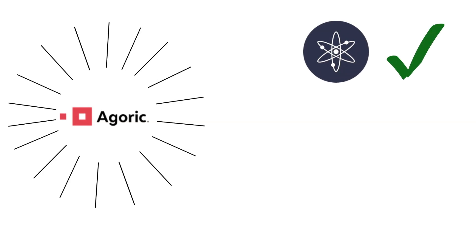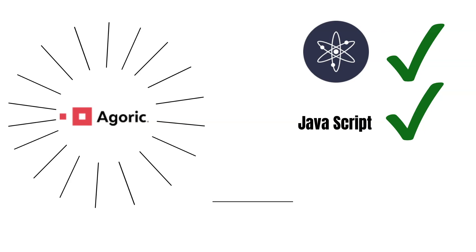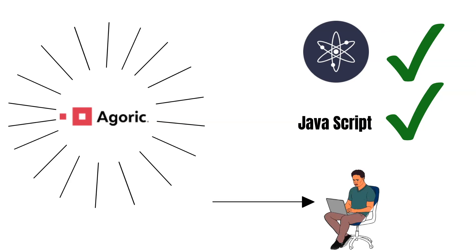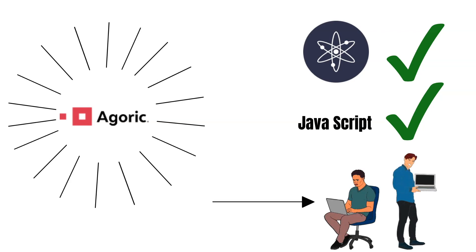The IST token will be distributed on Agoric. Agoric is a Cosmos-native blockchain that is about to go fully live very soon. Agoric is famous for allowing developers to build smart contracts with JavaScript. As of now, developers need to program in Solidity to build smart contracts. However, JavaScript is a much more widely adopted programming language than Solidity, so Agoric opens up a large market to bring more developers into Web3.